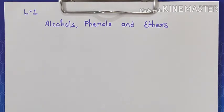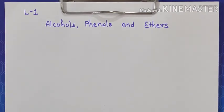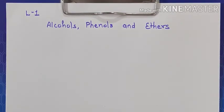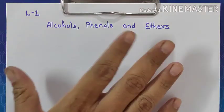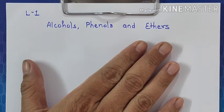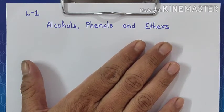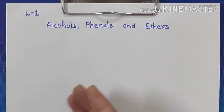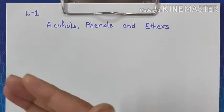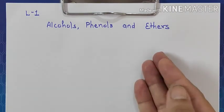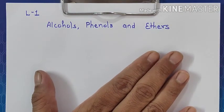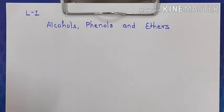Hello students, welcome to the new chapter of organic chemistry — Paper 2: Alcohol, Phenol and Ether. In this chapter, until nomenclature we will be studying alcohol, phenol and ether together, and once preparation starts we will do alcohol, then phenol, then ethers.